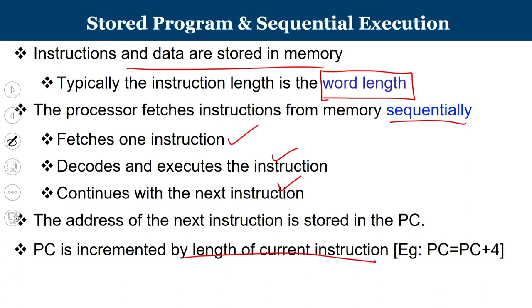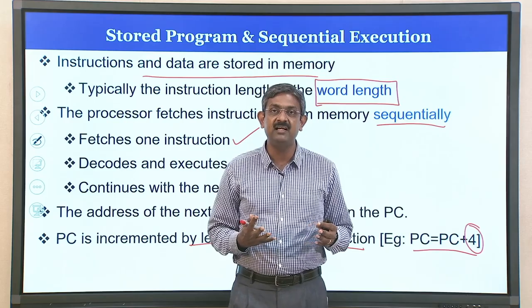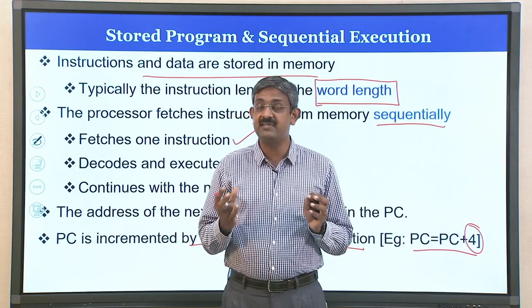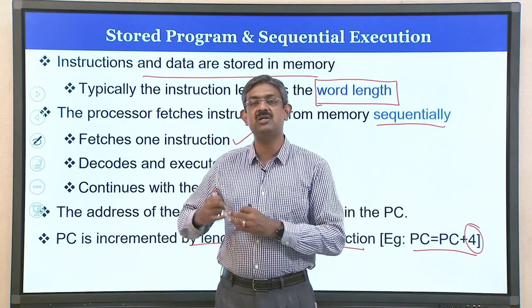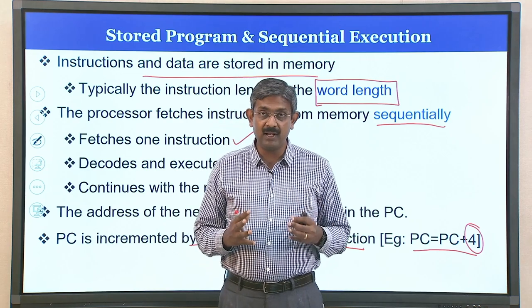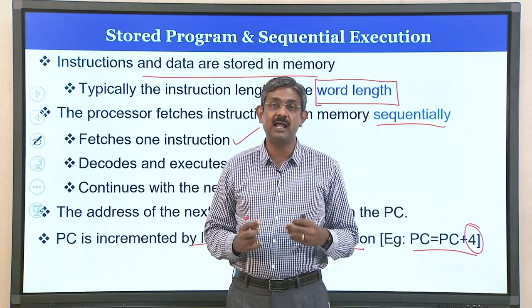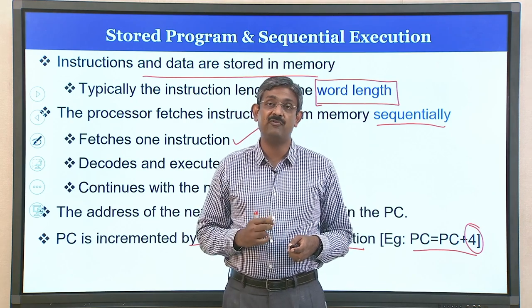Depending on the length of the current instruction, the program counter is incremented accordingly. If the length of the current instruction is 4 bytes, then PC = PC + 4. If it is 8 bytes, PC = PC + 8; if it is a single byte instruction, we move by 1. A PC incrementer is an additional circuit connected to the PC which updates the PC value depending upon the length of the current instruction being fetched.